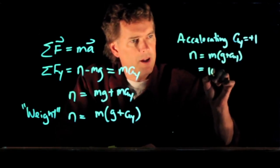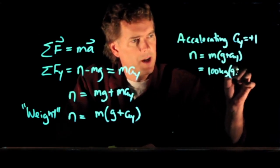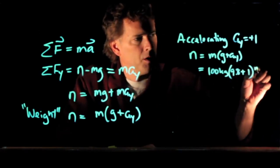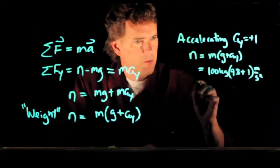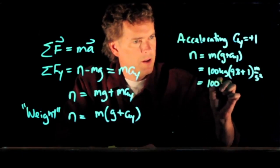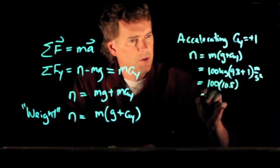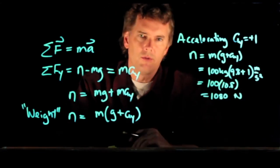Our mass was 100 kilograms, g is 9.8, and we're going to add one. Both are meters per second squared. If you run those numbers, you get 100 times 10.8, which is 1,080 newtons.